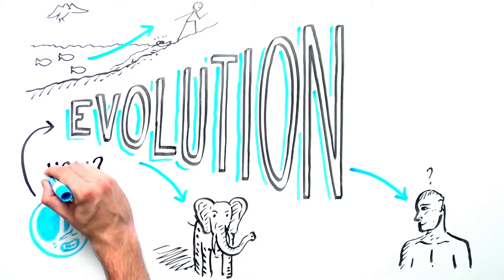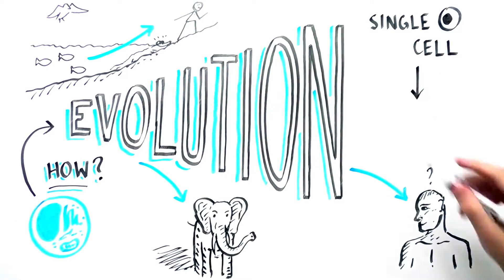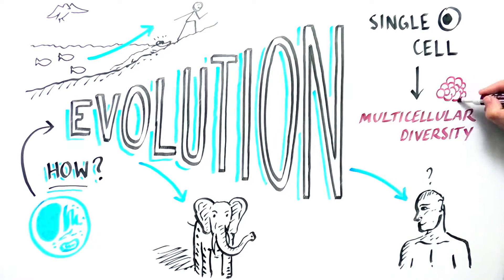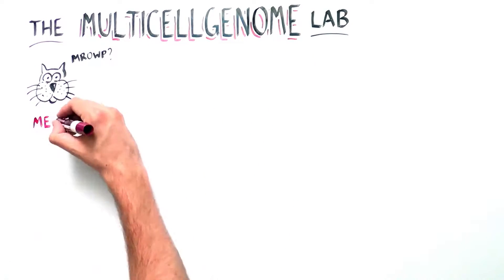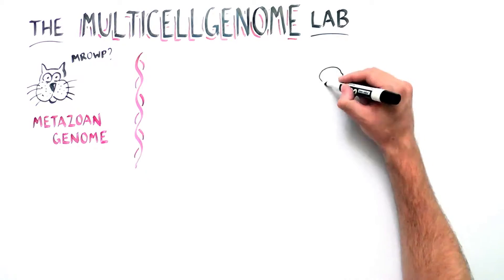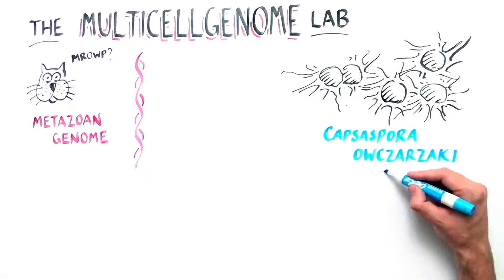This amazing fact begs the question: how did the first multicellular animal evolve from a single-cell ancestor to give rise to such diversity? The Multicell Genome Lab decided to unravel this intriguing mystery by comparing the genomes of metazoans to one of their closest unicellular relatives, the amoeba Capsospora azarzaki.